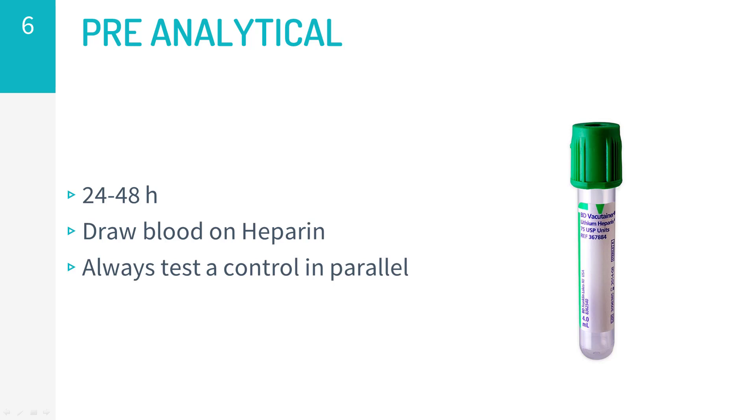First, since the DHR test requires the production of ROS by neutrophils, it is imperative that neutrophils are viable when assessed. This mandates the use of freshly drawn blood, which is analyzed within 24 to 48 hours. The sample should be drawn in tubes containing an anticoagulant agent that does not reduce the viability of cells. Usually heparin is employed. Tubes should be transported to the laboratory at room temperature.